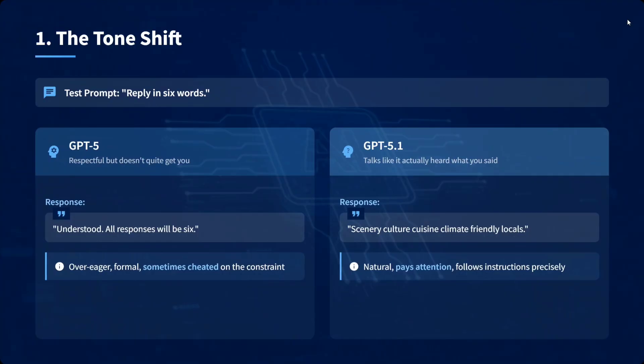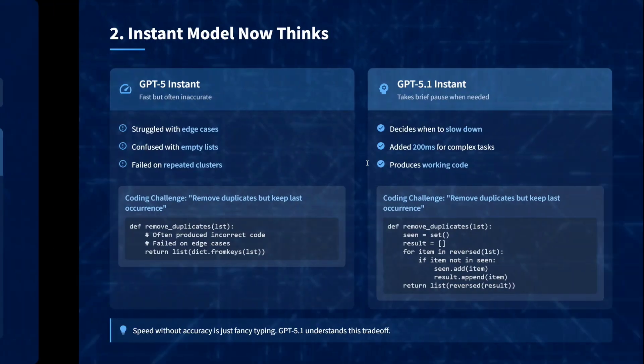For tone shift, here are some examples: GPT-5 responds respectfully but doesn't quite understand what you're getting at, while GPT-5.1 talks like it actually heard what you said.